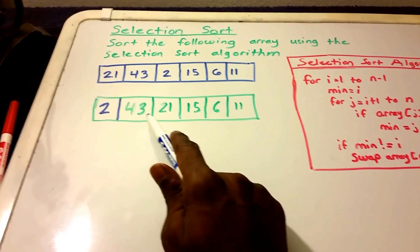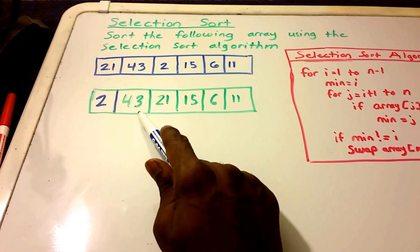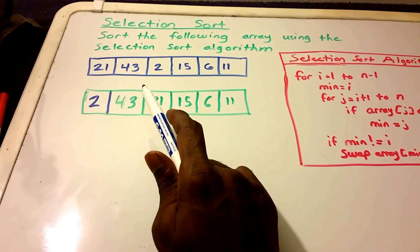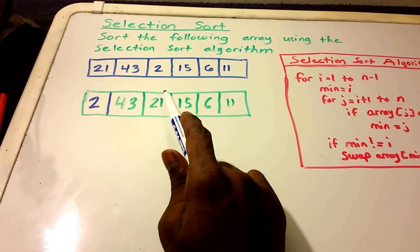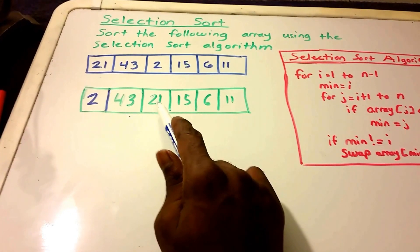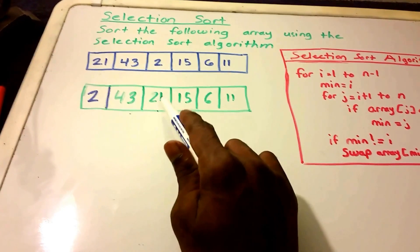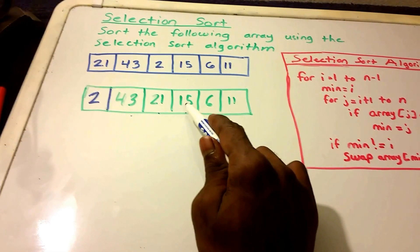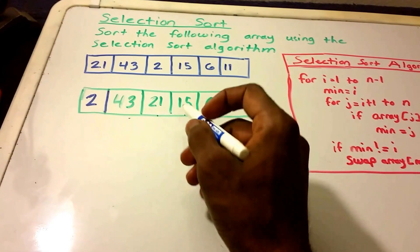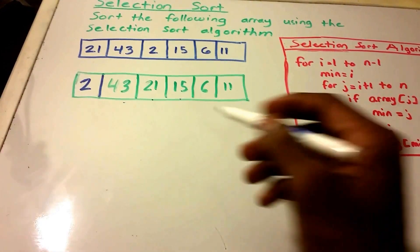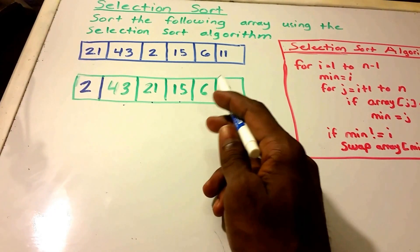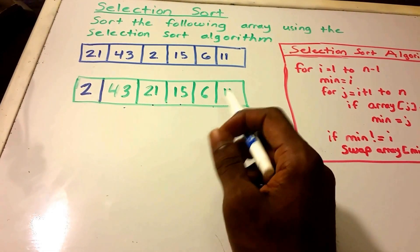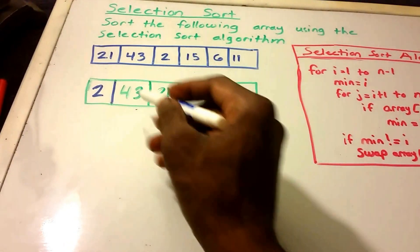So now we're going to go to this 43 here. So we check to see if 43 less than 21. Sorry, we check to see if 21 is less than 43. And it is. So now 21 is our smallest value. Then we check to see if 21 greater than 15. And yes, it is. So we have to remember now that 15 is our minimum value. And then we check to see if 15 is greater than 6. And it is. So now 6 is our minimum value. And we check to see if 6 is greater than 11. And it's not. So 6 is our minimum value. And what we're going to do is swap that 6 with 43.